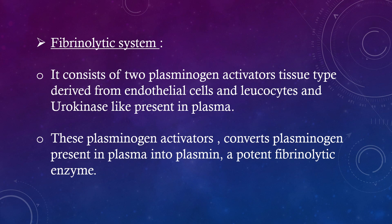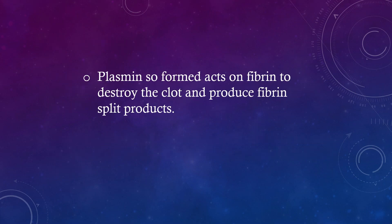Fibrinolytic system: It consists of two plasminogen activators — tissue-type, derived from endothelial cells and leukocytes, and urokinase-like, present in plasma. These plasminogen activators convert plasminogen present in plasma into plasmin, a potent fibrinolytic enzyme. Plasmin acts on fibrin to destroy the clot and produce fibrin split products.